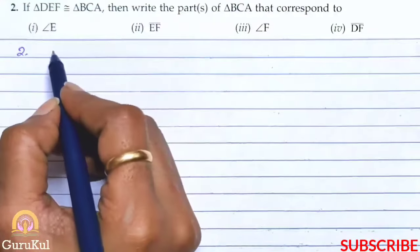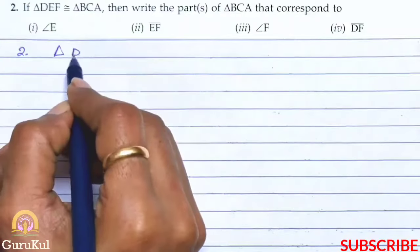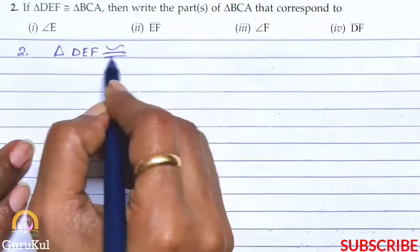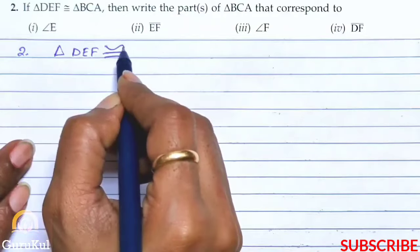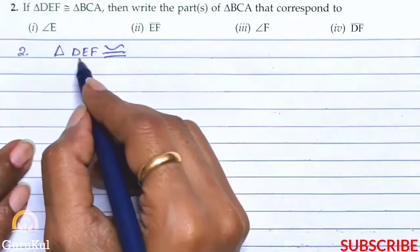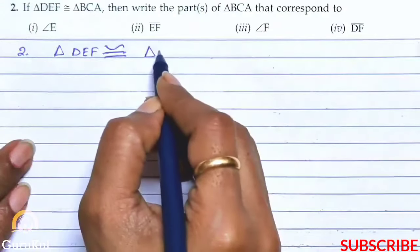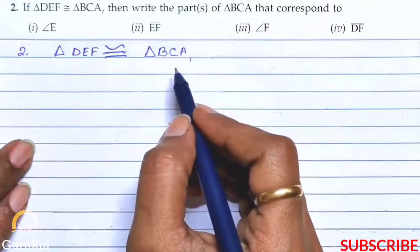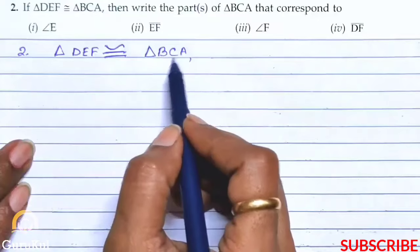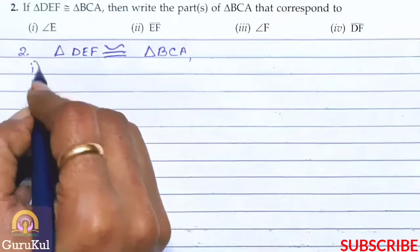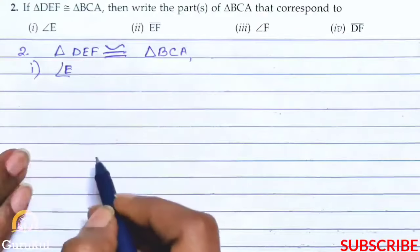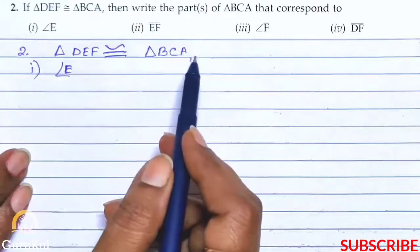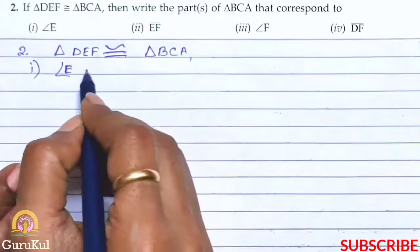Now question number two. It says triangle DEF is congruent to, this is the congruence symbol, equal to with a wavy line above. So triangle DEF is congruent to triangle BCA. This is mentioned. Now we have to write the parts of triangle BCA that corresponds to, first is angle E. So angle E, which angle in BCA will correspond to it?